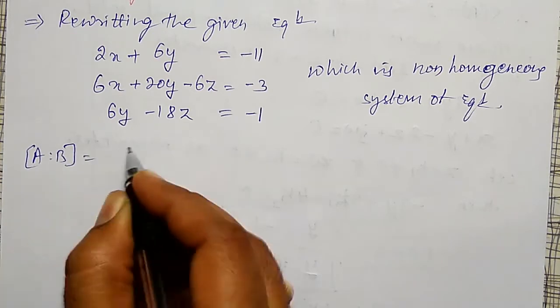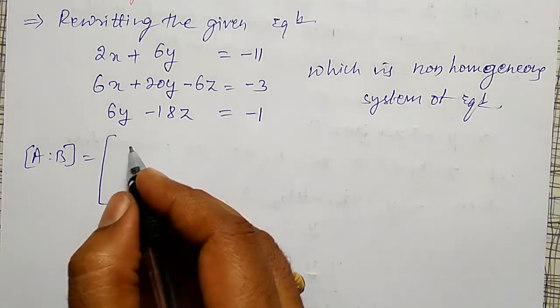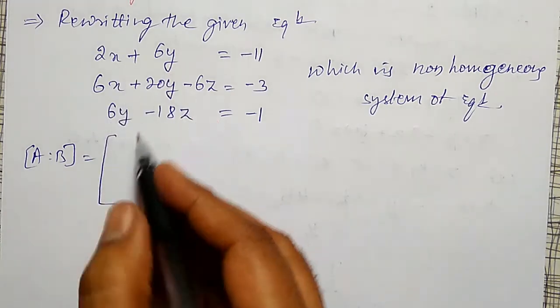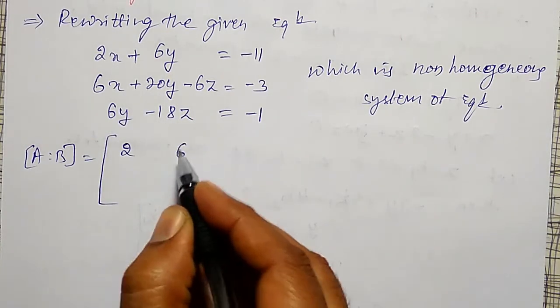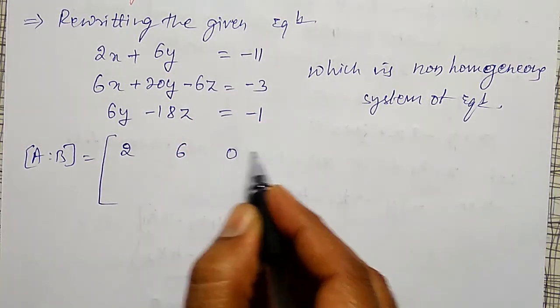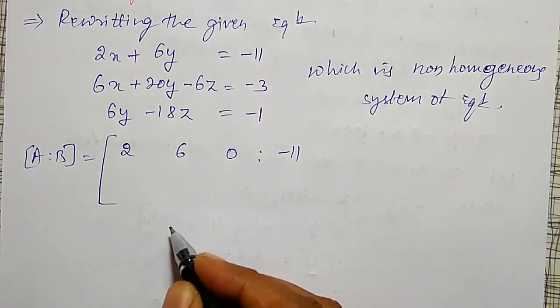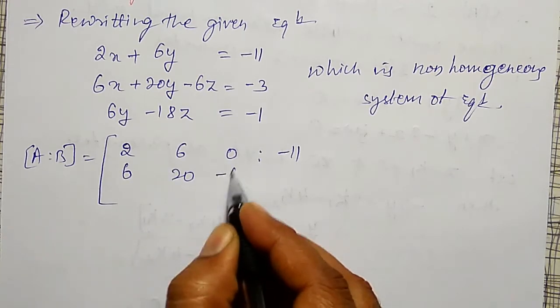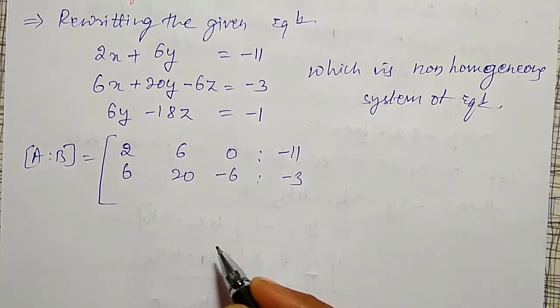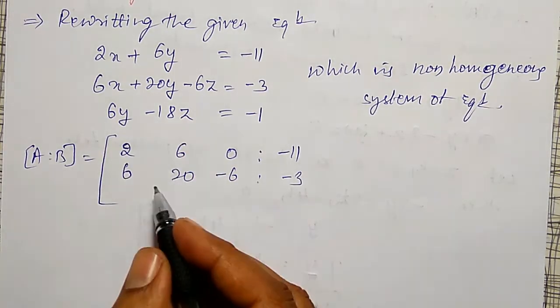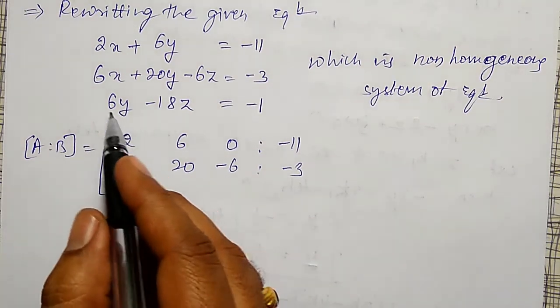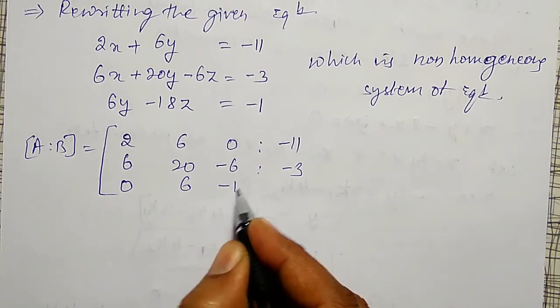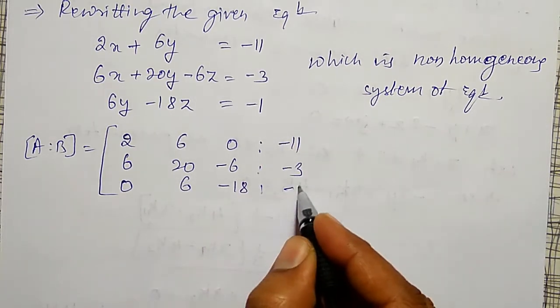My augmented matrix is given by, first three unknowns, coefficients of unknowns. That is 2, 6, z is not present I will take a 0, colon, right hand side values minus 11. Second equation is 6, 20, minus 6, minus 3. Third equation, x coefficient is not there I will take it as 0, 6, minus 18, and equal to minus 1.